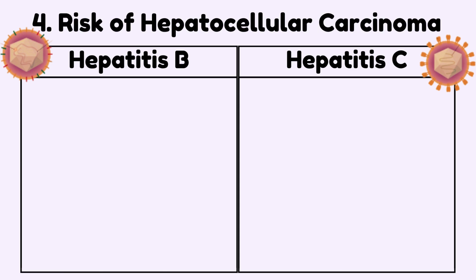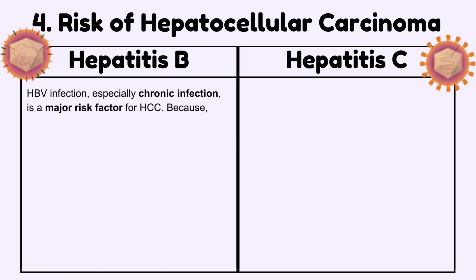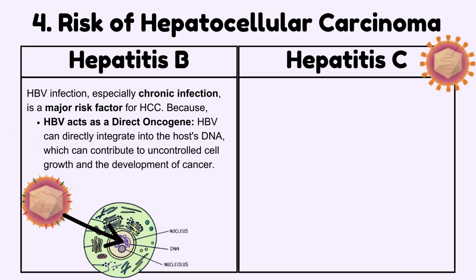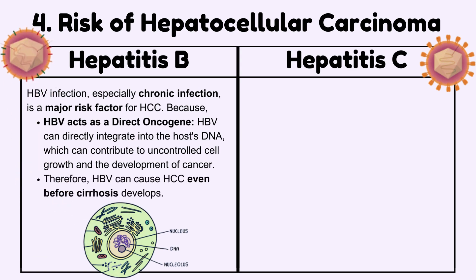Risk of hepatocellular carcinoma: Hepatitis B infection, especially chronic infection, is a major risk factor for hepatocellular carcinoma, because Hepatitis B acts as a direct oncogene. Hepatitis B can directly integrate into the host's DNA, which can contribute to uncontrolled cell growth and the development of cancer. Therefore, Hepatitis B can cause hepatocellular carcinoma even before cirrhosis develops.